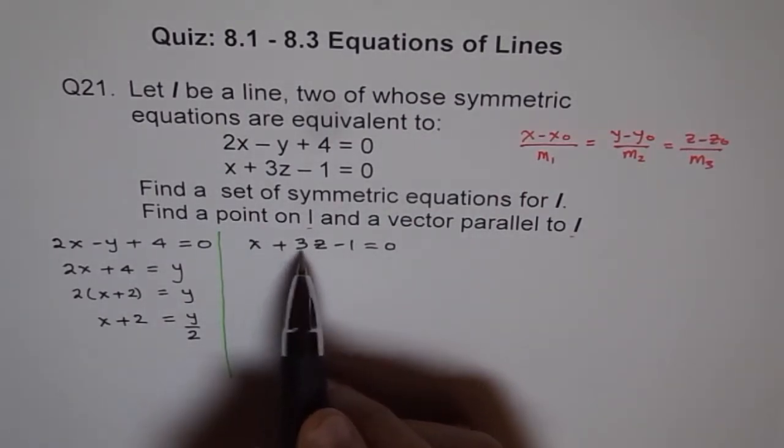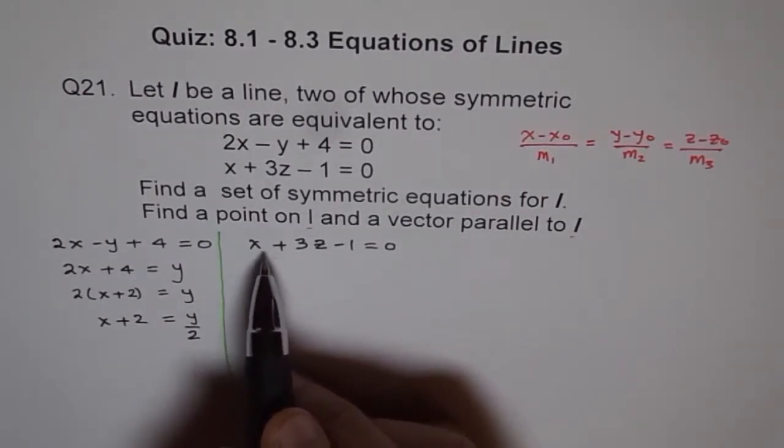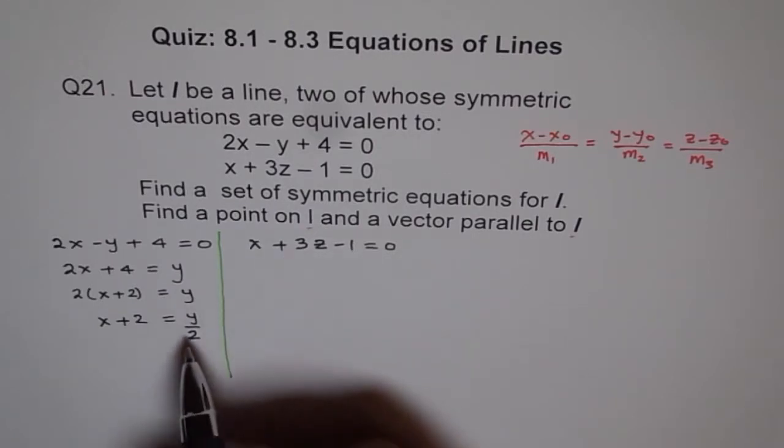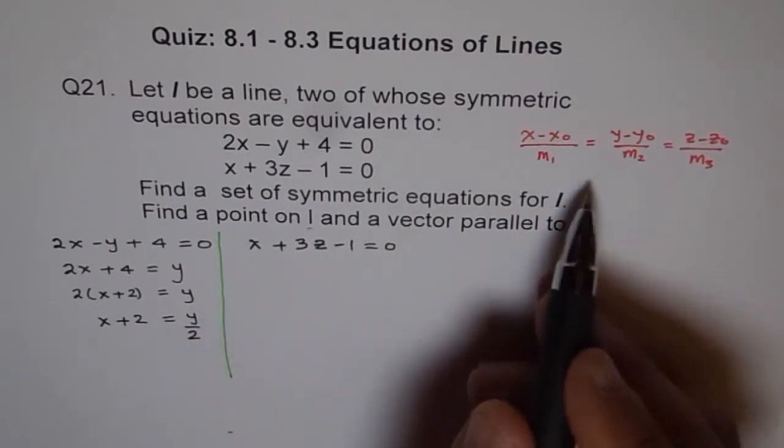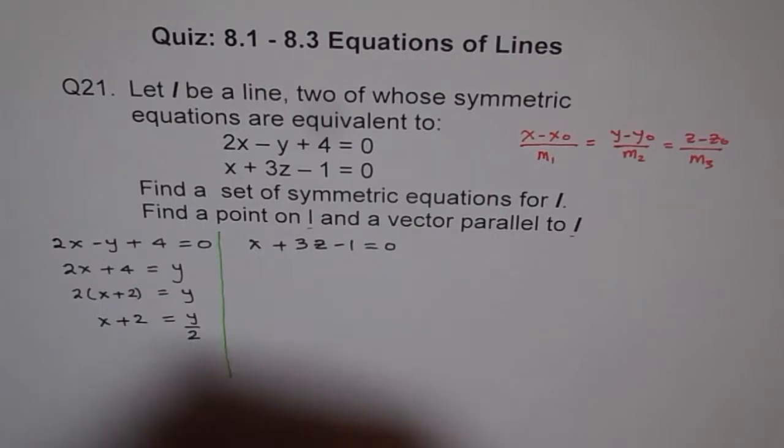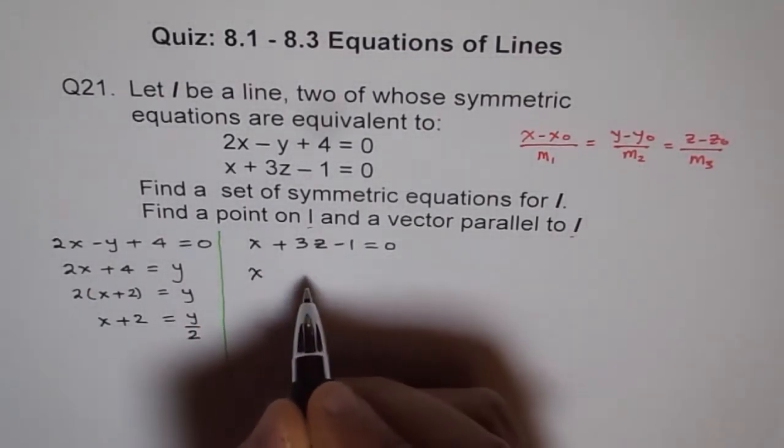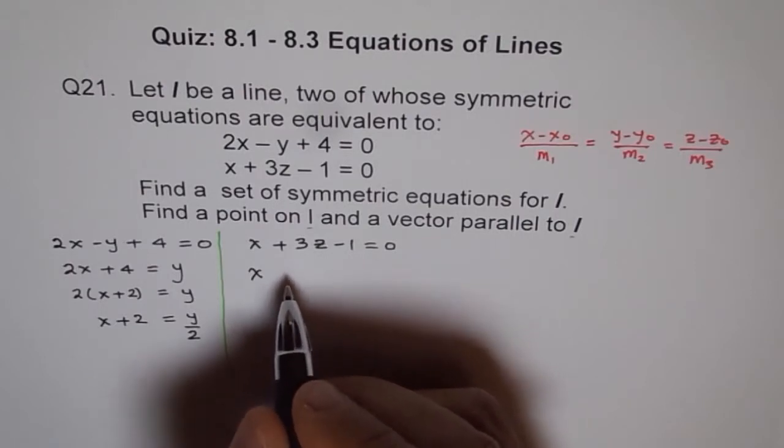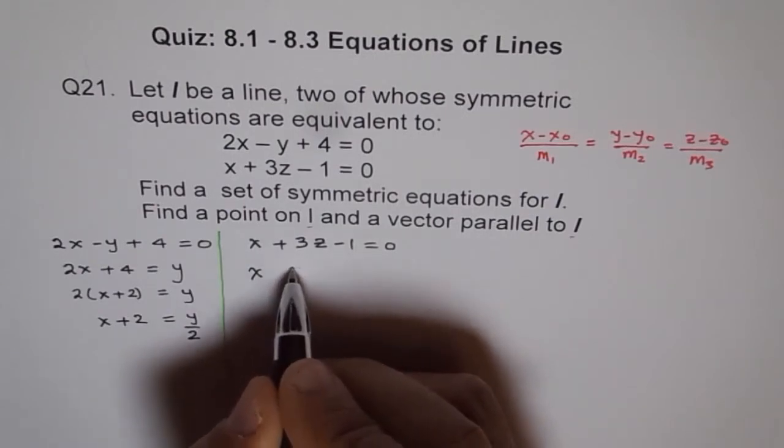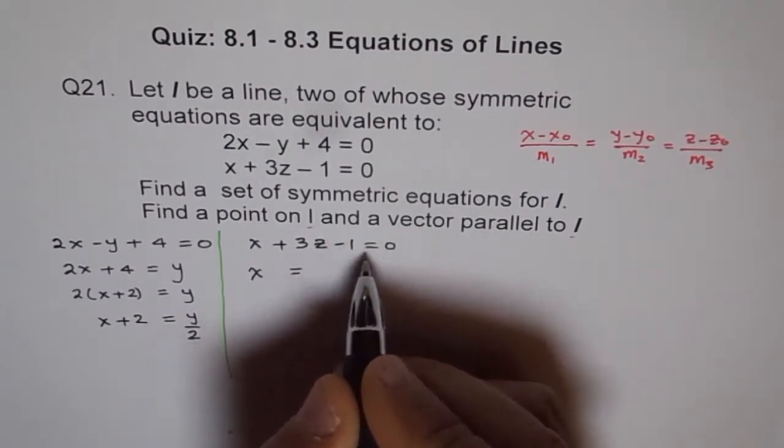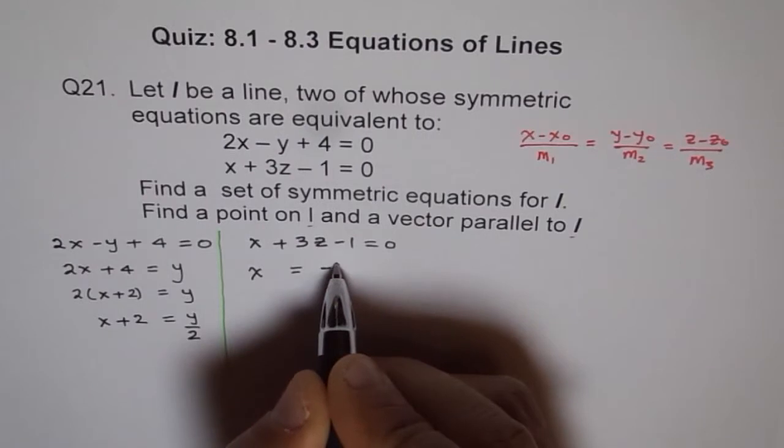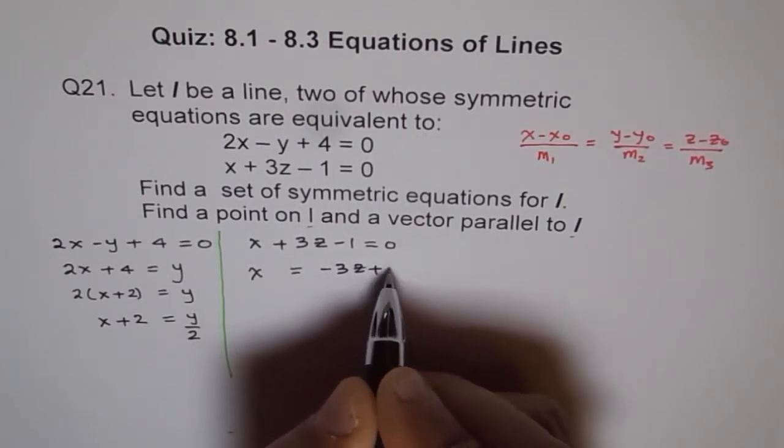So we have here x plus 3z minus 1 equals 0. And we will do the same procedure and find what this should be. The strategy is that we want to equate them equal to. So what we can do is, there is no y here, but there is an x. So we will do x plus 2 equals to. If I write x plus 2 equals something, then I can equate them like this.